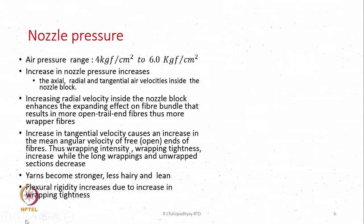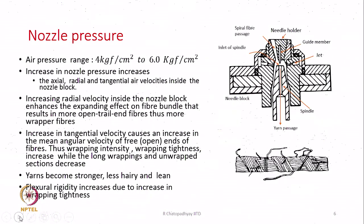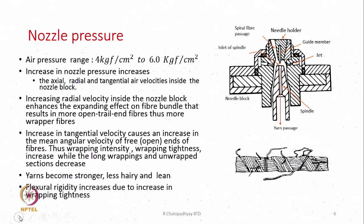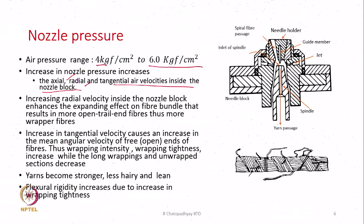Now we come to one of the most important parameters: nozzle pressure. If the pressure is increased, the velocity of air entering the nozzle is also going to increase. Typically, air pressure ranges between 4 kgf/cm² to 6 kgf/cm². An increase in nozzle pressure will increase the axial, radial, and tangential air velocities inside the nozzle block.